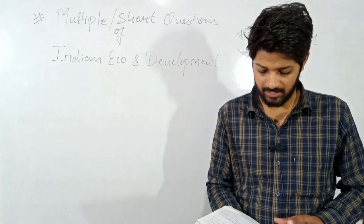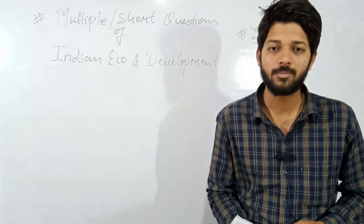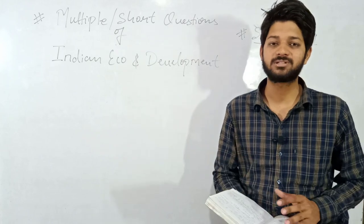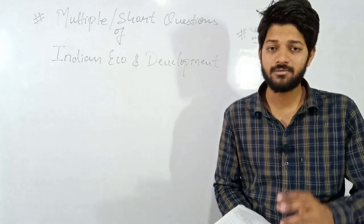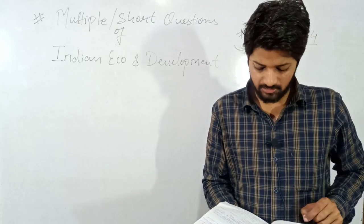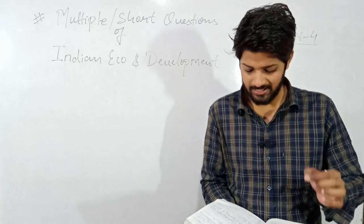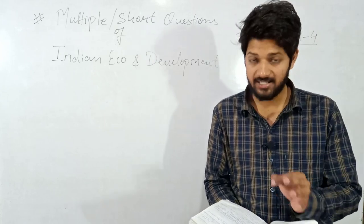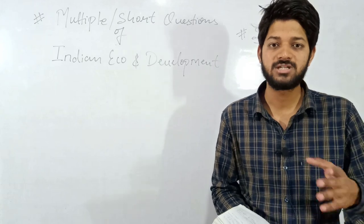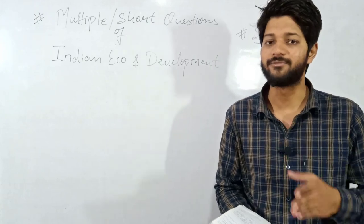Question number sixteen: which of the two countries adopted a mixed economy? The answer will be India and Pakistan. The seventeenth question: the Sarvodaya Plan was given by whom and in which year? The answer is it was given by JP Narayan in the year 1950.